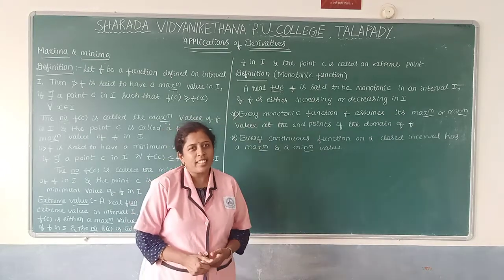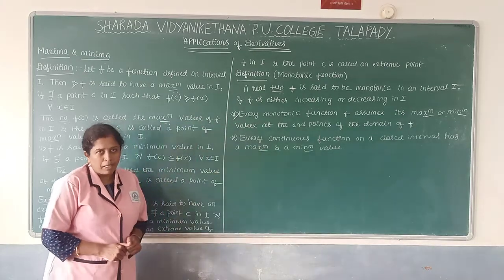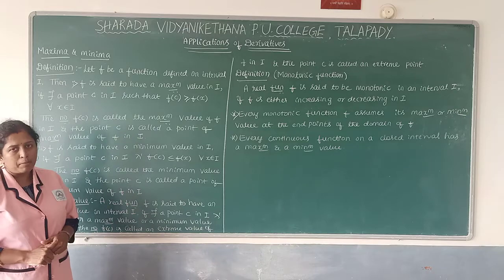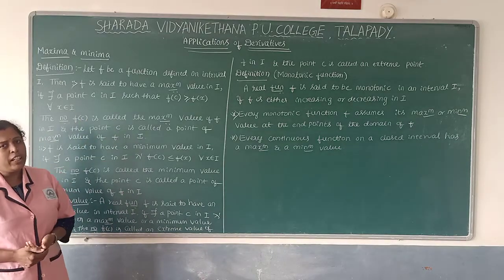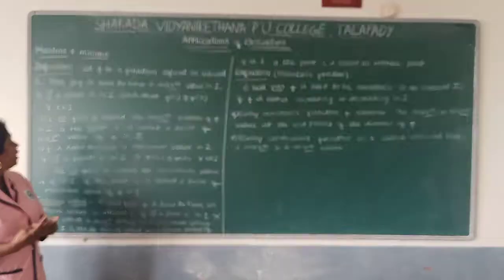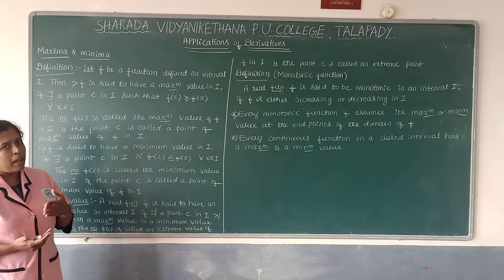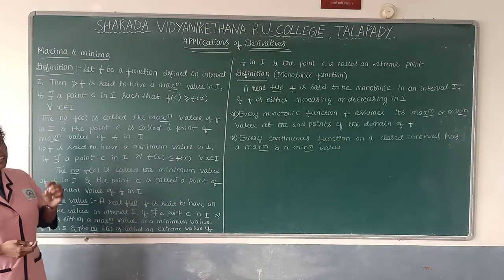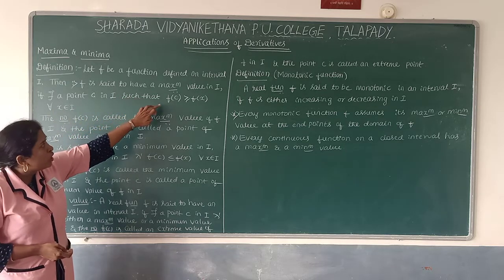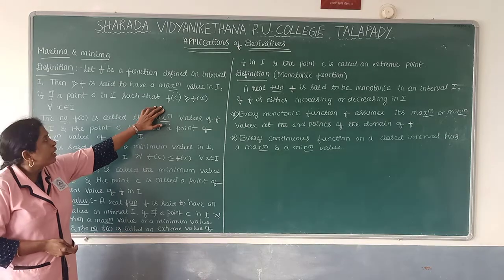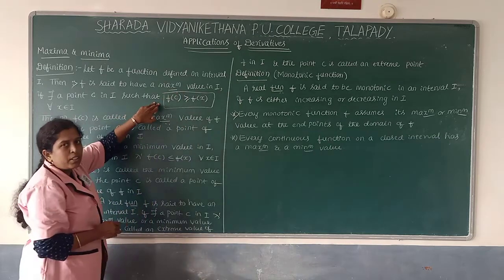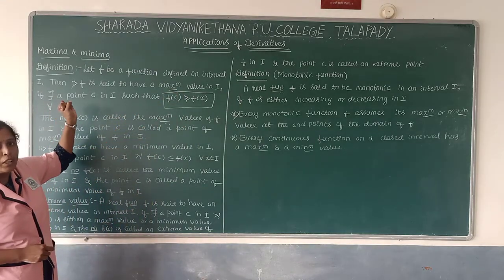Namaste students, today let us discuss maximum and minimum. When we call a function maximum or minimum, what is the definition? Let F be a function defined on the interval I. Then F is said to have a maximum value in the given interval I if there exists a point c in I such that F(c) is greater than or equal to F(x) for all x belonging to I.